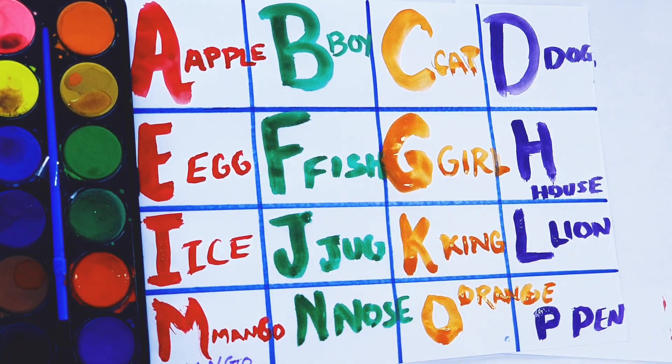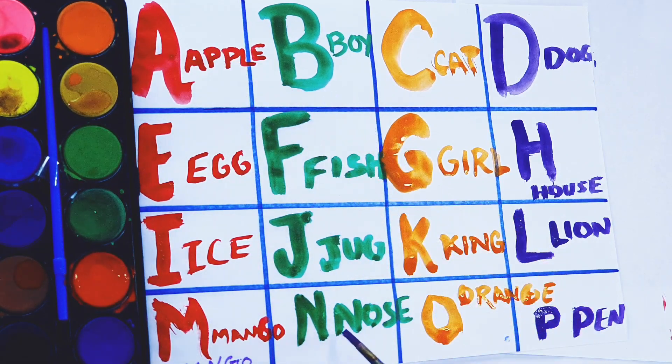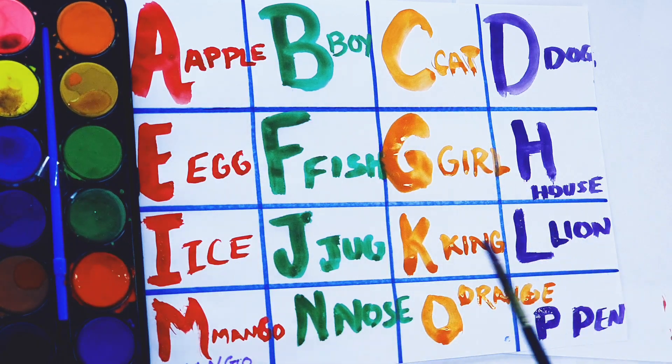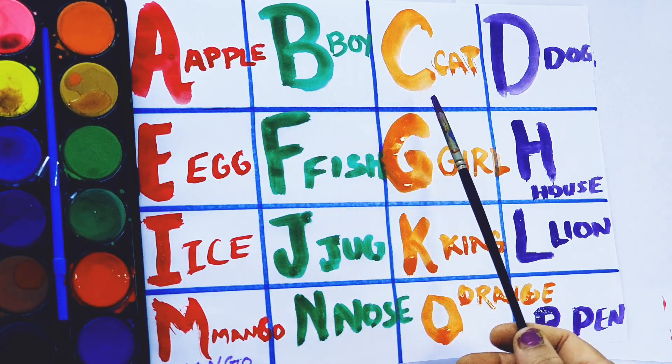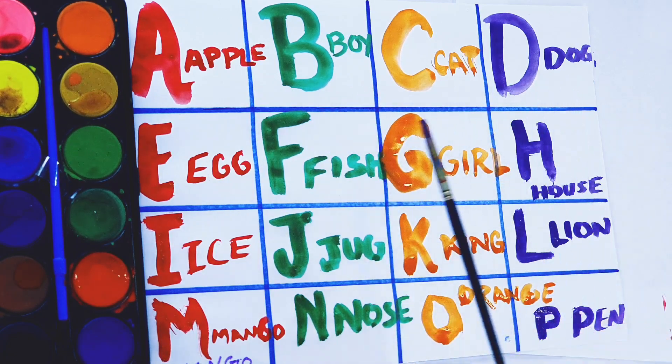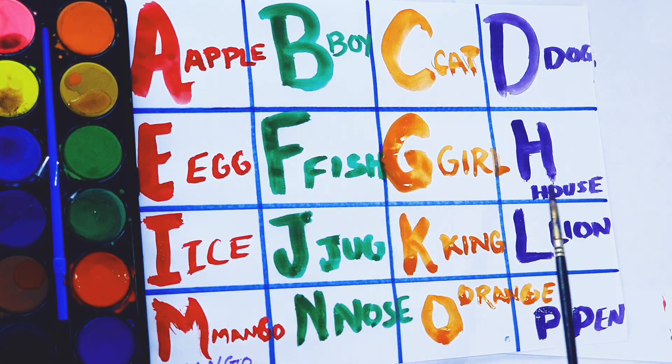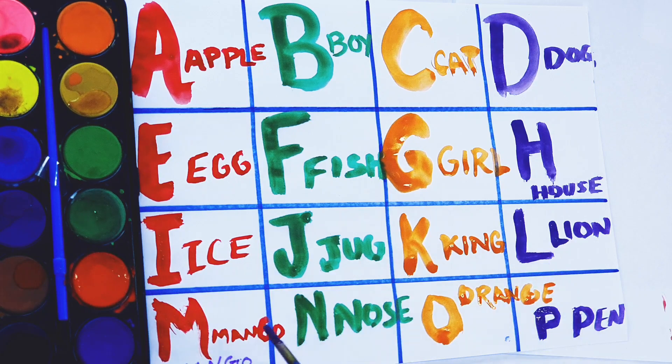So kids, what we learn today? We learn red color, green color, orange color, and purple color. A for apple, B for boy, C for cat, D for dog, E for egg, F for fish, G for girl, H for house, I for ice, J for jug, K for king, L for lion, M for mango, N for nose, O for orange, P for pen.